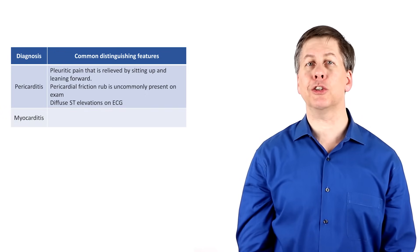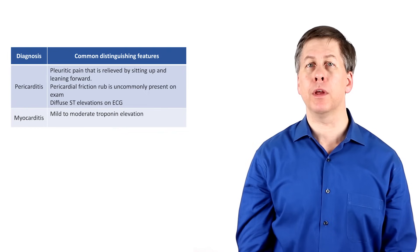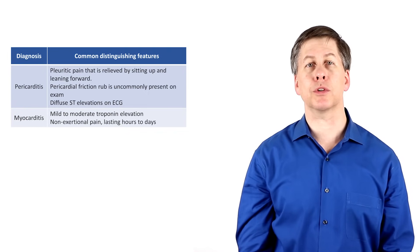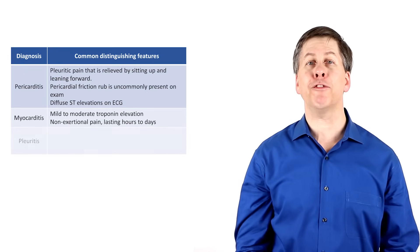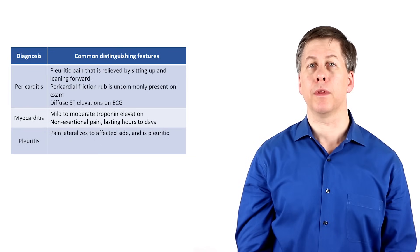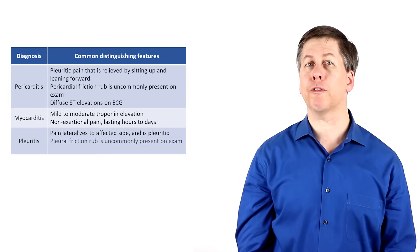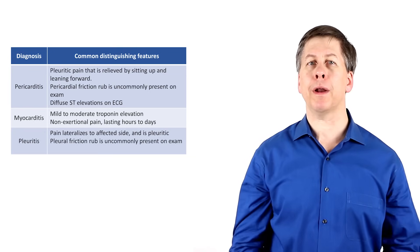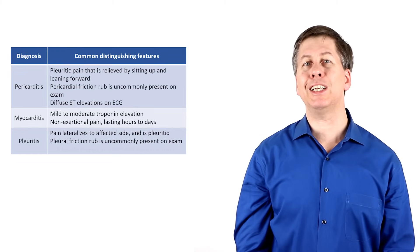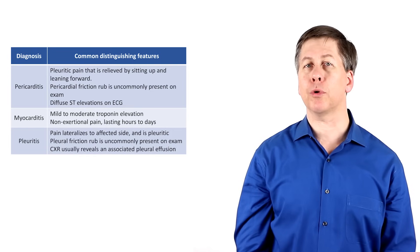Pain from myocarditis is associated with an elevated troponin, but unlike with ACS, is non-exertional and lasts hours or longer. Pain from pleuritis lateralizes to the affected side and is pleuritic. It may be associated with a pleural friction rub, but as with a pericardial rub, it's usually absent. A chest x-ray usually reveals an associated pleural effusion.